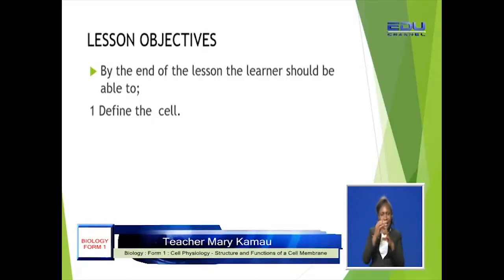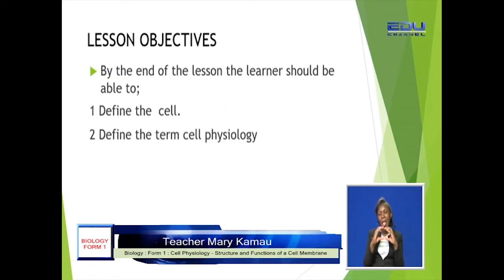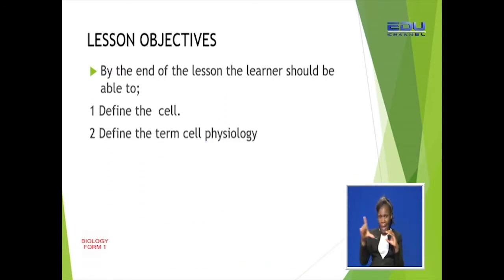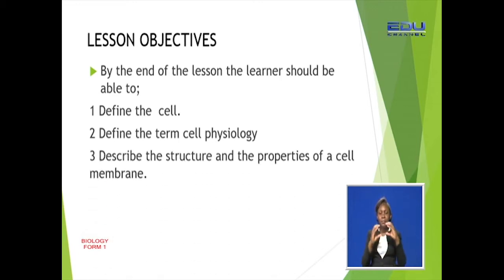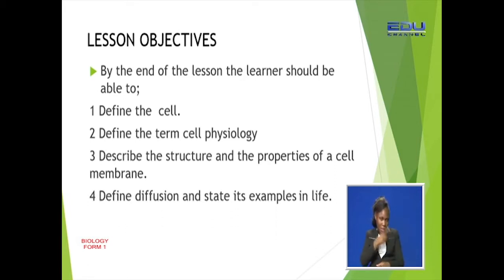To start us off, we have our lesson objectives. By the end of the lesson, the learner should be able to: define what a cell is, define the term cell physiology, describe the structure and properties of a cell membrane, and also define diffusion and state its examples in life. Those are the objectives we want to achieve by the end of our lesson today.